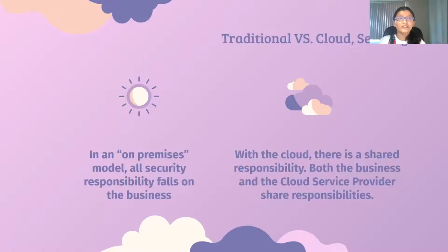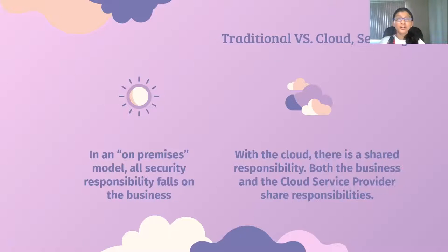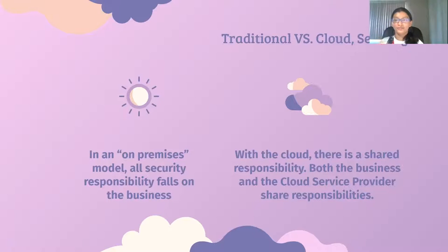Now let's take a look at the security standpoint. In an on-premises model, all the security responsibility would fall on the business, which makes sense because you have access to the physical data center — you're free to disconnect and reconfigure the machines. But with the cloud, there is a shared responsibility model which comes into play. Management and security assessment of the cloud becomes a little bit more difficult. The idea is that both the business and the cloud service provider share responsibilities — both parties are involved and no one party is responsible for it all.